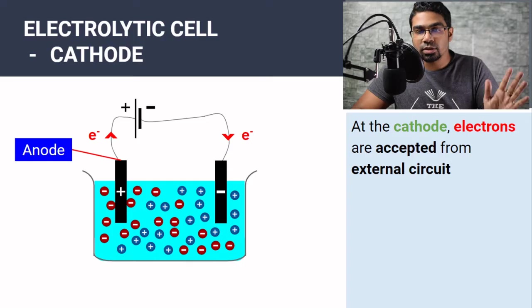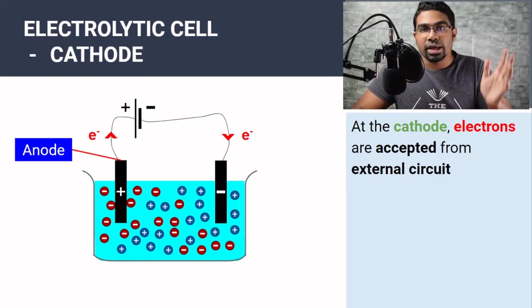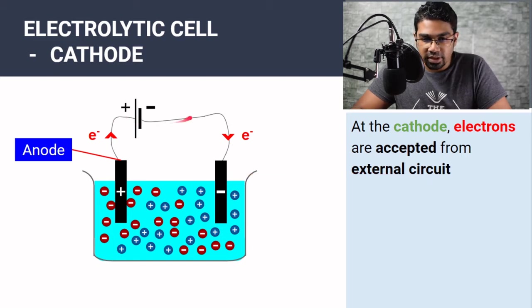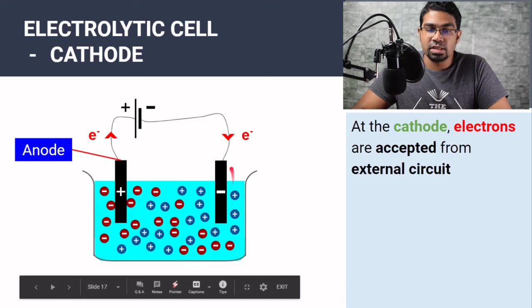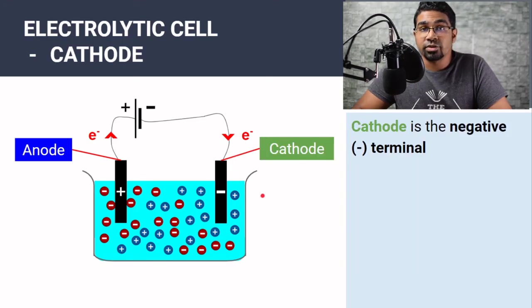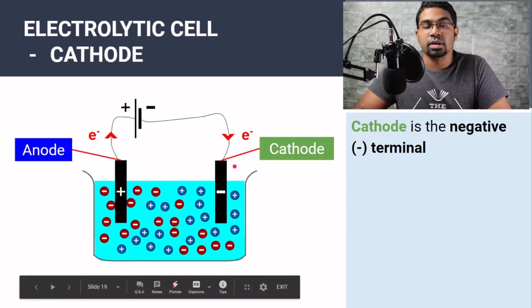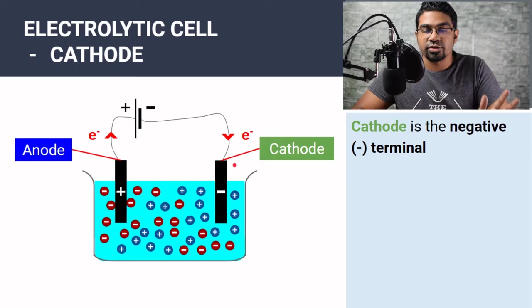And the cathode is the opposite of the anode. So the cathode is where electrons are accepted from the external circuit. Electrons are coming into the electrode here, so this is the cathode. In an electrolytic cell, the cathode happens to be the negative electrode. This is not always the case, but it is true for an electrolytic cell.